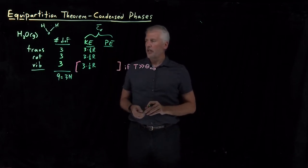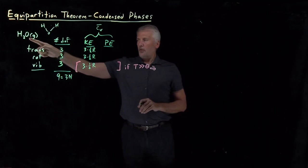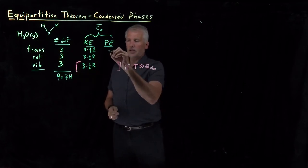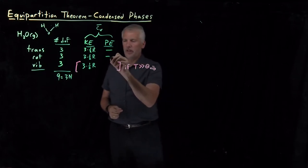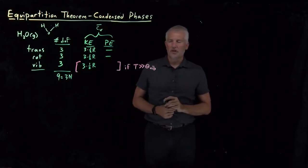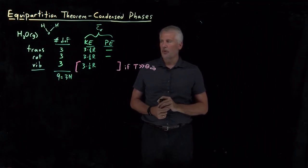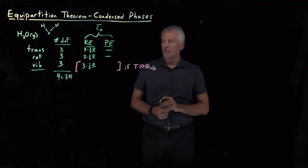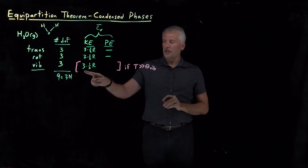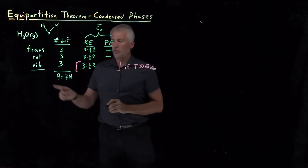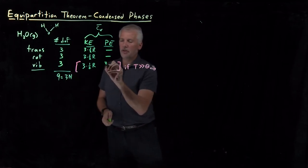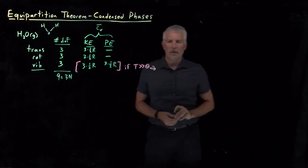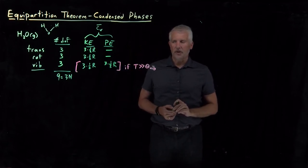For the potential energy: when a water molecule translates through a gas, there's no contribution to the potential energy, and likewise for rotation — so those are not quadratic in potential energy and don't contribute. Vibrations do contribute, because the harmonic oscillator gives a quadratic potential energy. So each of the three vibrational degrees of freedom contributes an additional ½R to the heat capacity, if we're hot enough to treat the vibrations classically.